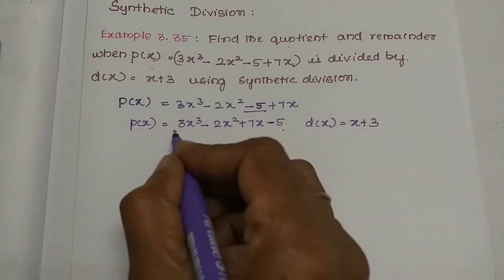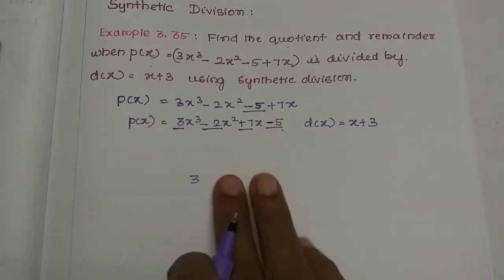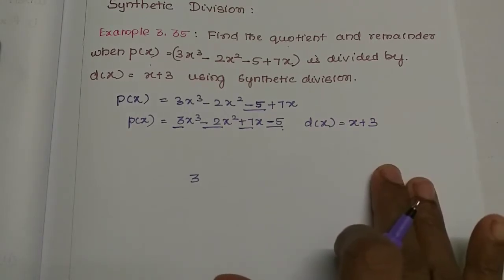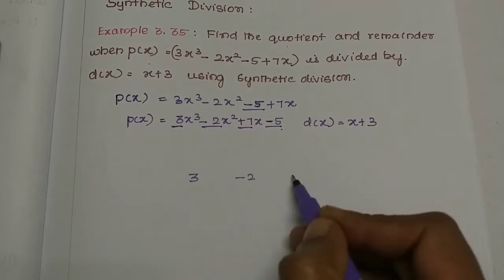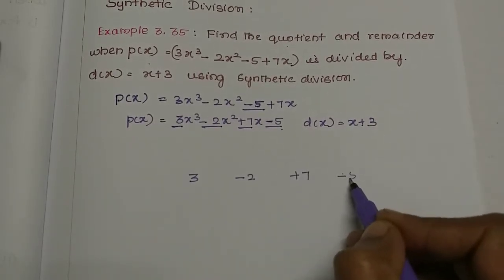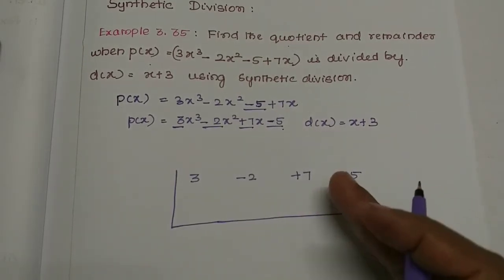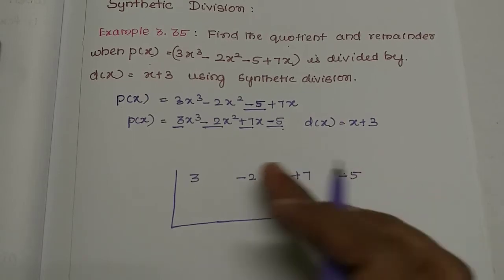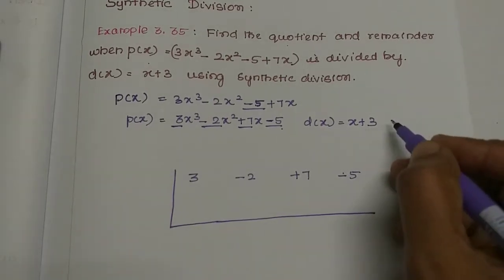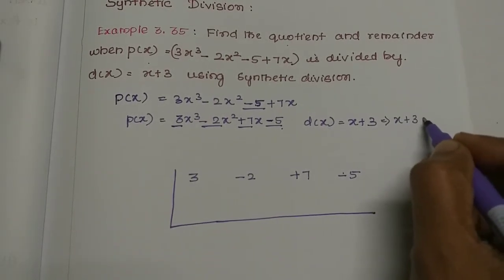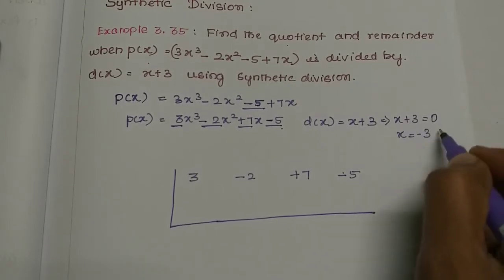We write the coefficients with spacing: 3, then -2, then +7, then -5. For the divisor x + 3, we set x + 3 = 0, which gives x = -3. So we use -3 as our divisor value on the left side.